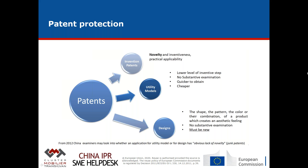Regarding patents, there are three different types. Invention patents require novelty, inventiveness, and practical applicability. Utility models — sometimes called 'baby patents' — have a lower level of inventive step, require no substantive examination, are quicker to obtain and cheaper, and cannot be done for processes. For the furniture industry, most applications are not related to processes. Then there are design patents, which are a core and fundamental right for the furniture industry — they protect the shape, pattern, color, or combination of a product that creates an aesthetic feeling.